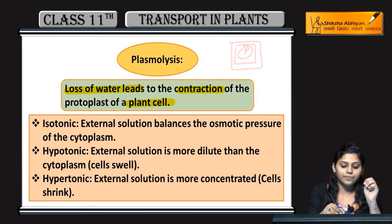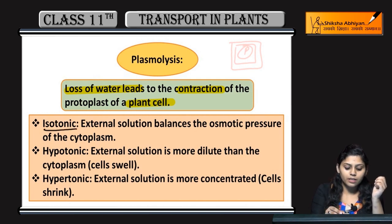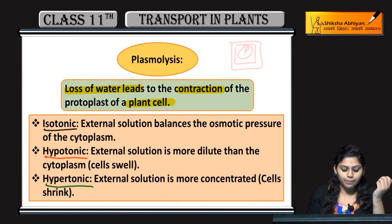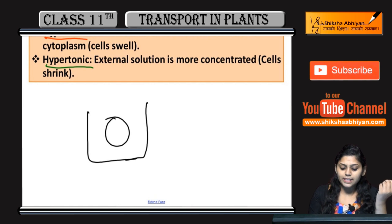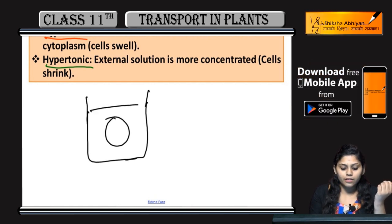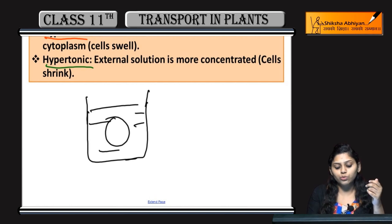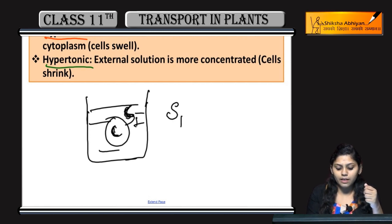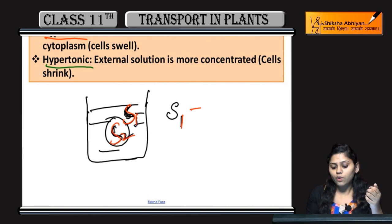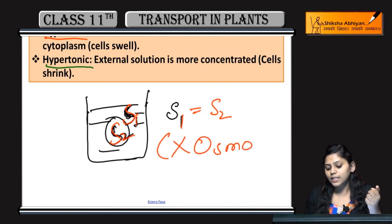Plasmolysis mein teen conditions hoti hain: isotonic, hypotonic, aur hypertonic. Agar ek container hai, us mein cell placed hai, aur container mein solution hai — jab solution aur cell dono mein water ki concentration ya solute ki concentration same ho, S1 aur S2 same hain, tab koi bhi osmosis nahi hogi. Means koi bhi water movement nahi hogi.